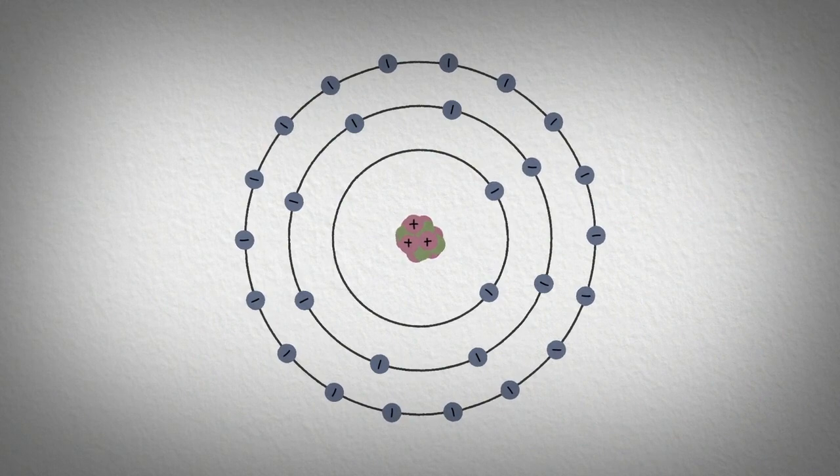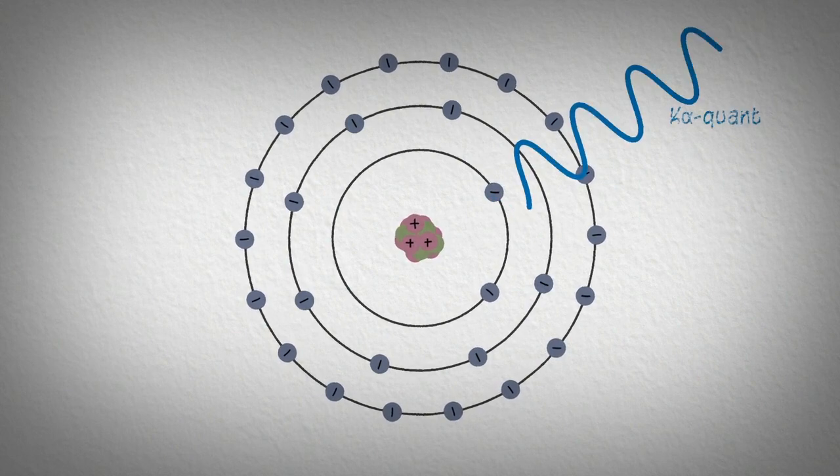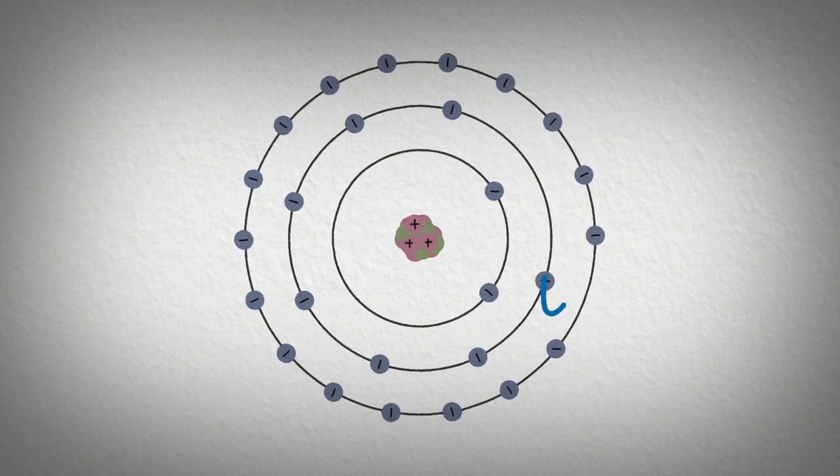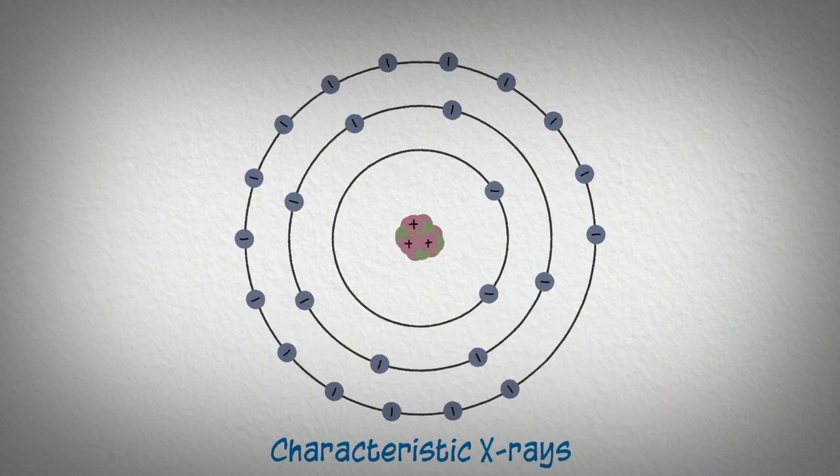The second possibility is that an electron is knocked out of the atom. The hole is filled by a higher energy electron, resulting in the emission of an X-ray with a very specific energy. These are called characteristic X-rays.